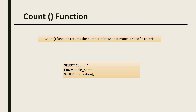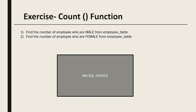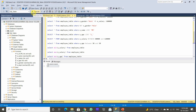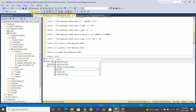The COUNT function returns the number of rows that match a specified criteria. The syntax is SELECT COUNT(*) — where the star represents counting all records — followed by FROM and the table name, then a condition specified under the WHERE keyword. Let's do a quick exercise: find the number of employees who are male from the employee table.